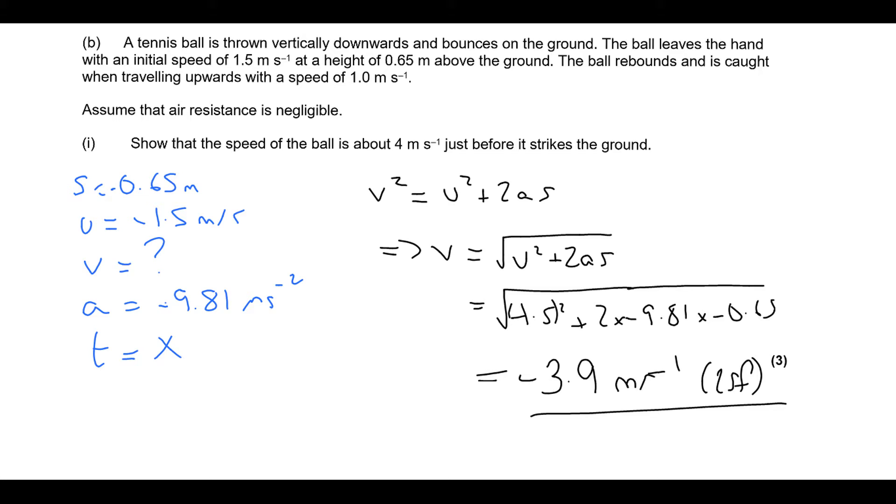So in terms of the marking points for this one, essentially there's a mark for selecting the right SUVAT equation. There's a mark for showing the numbers correctly substituted in, remembering your signs there. And then there's the final mark for giving minus 3.9 to two significant figures. If at some point you said in the question, I'm going to treat the downward direction as positive, you could end up with a plus solution. But using the methods we've looked at in class, you should end up with minus 3.9. And that's that one.